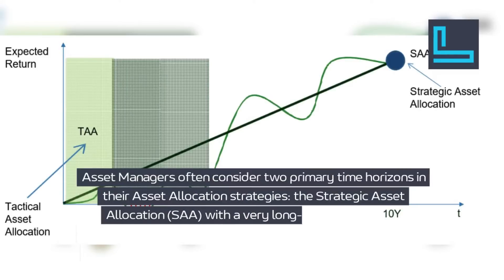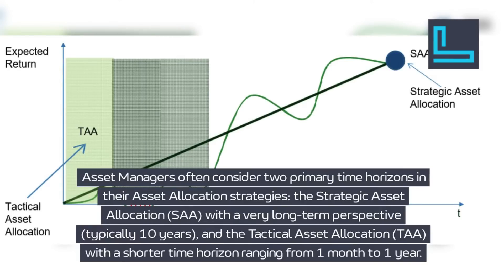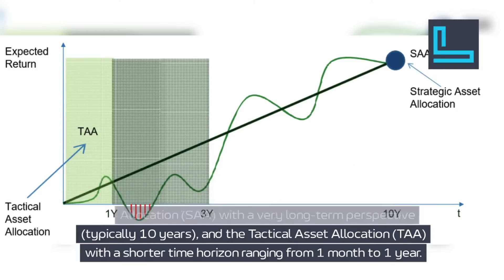Asset managers often consider two primary time horizons in their asset allocation strategies: the Strategic Asset Allocation (SAA), with a very long-term perspective, typically 10 years, and the Tactical Asset Allocation (TAA), with a shorter time horizon ranging from one month to one year.